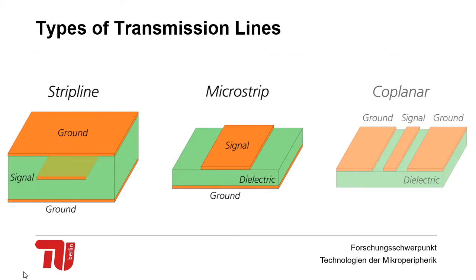The last step we can do to make that even a bit more thin is go coplanar. As the name coplanar says we have ground and signal now on the same plane.